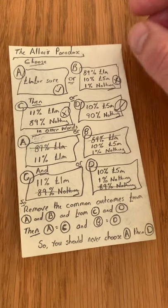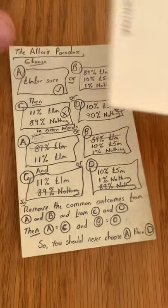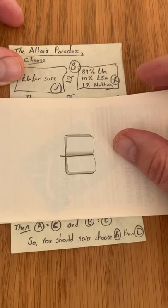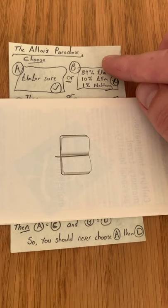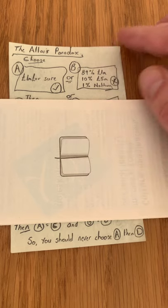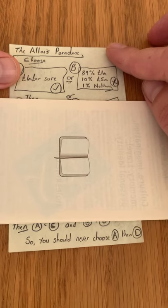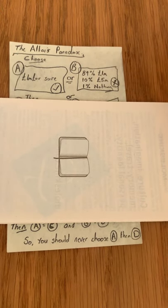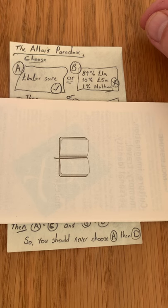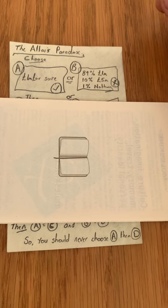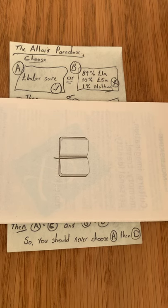Just to demonstrate what this is, you can ignore the other options for now and just look at A and B. You can consider these to be almost like little lottery tickets. Option A is a situation where you would simply be given £1 million for sure — a certainty.